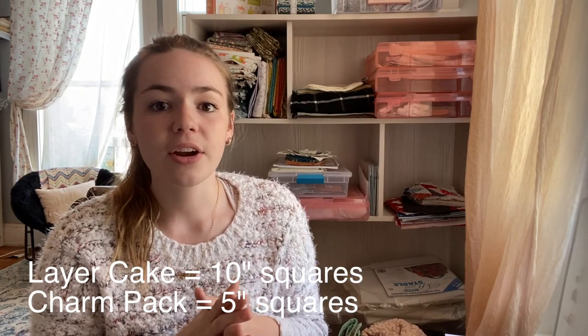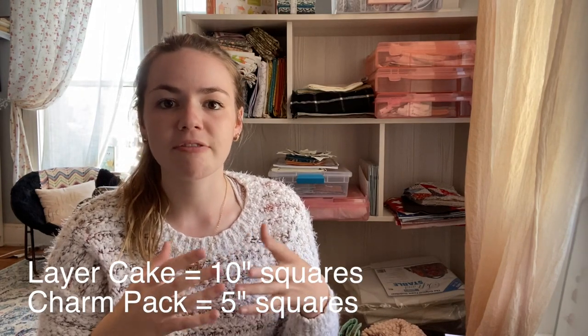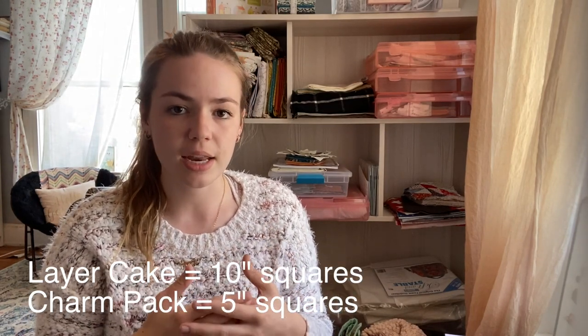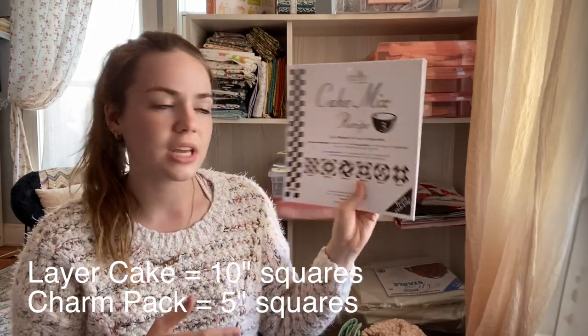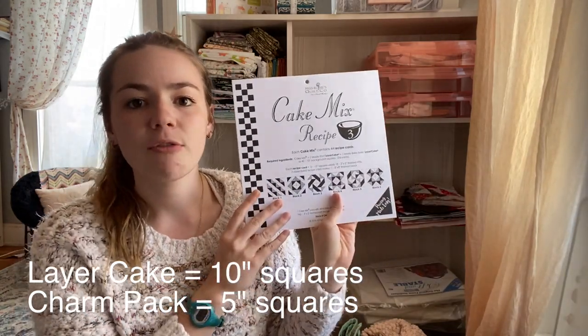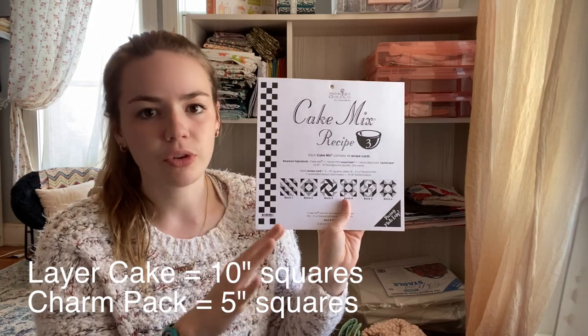The types of fabric that you can use for this project are either 10 inch squares that you cut yourself like I did or you can purchase a layer cake. A layer cake is a packet of pre-cut 10 inch squares. There's 42 pieces in a package which is perfect for the cake mixes. Cake mixes have 44 pieces so that allows two for error.